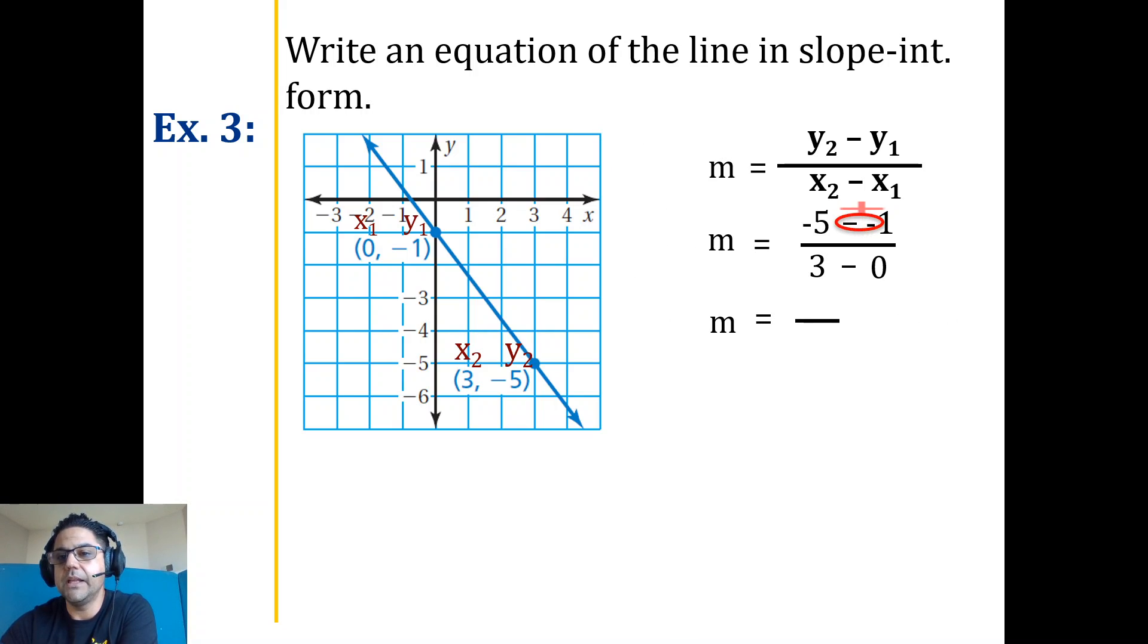Negative 5 plus 1 gives me a negative 4, and 3 subtract 0, just a 3. So if you notice, we get a negative slope like we predicted. My y-intercept, again, is where the line touches the y-axis.